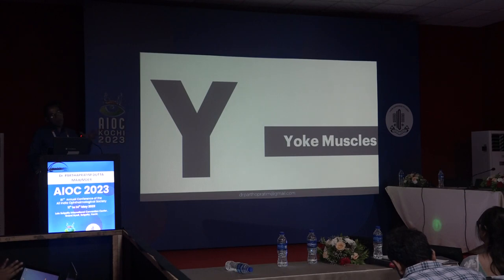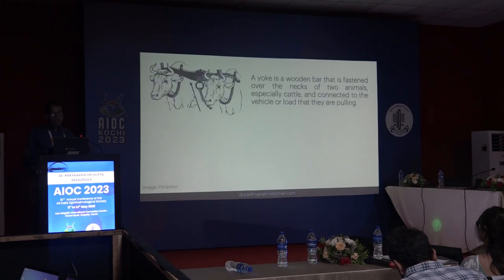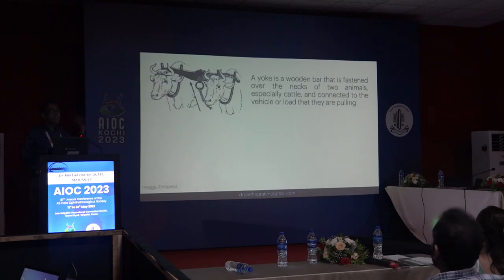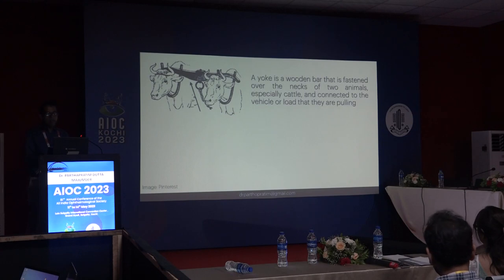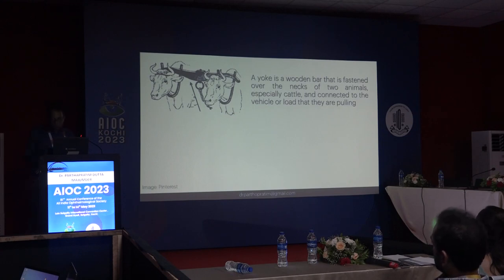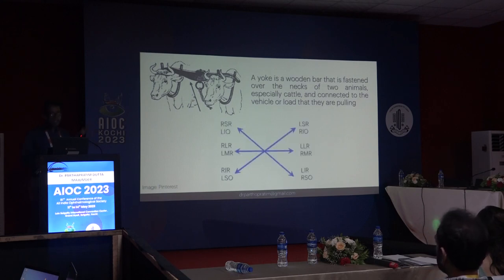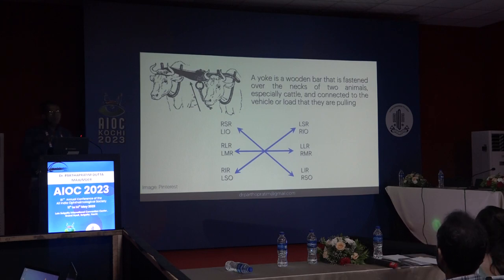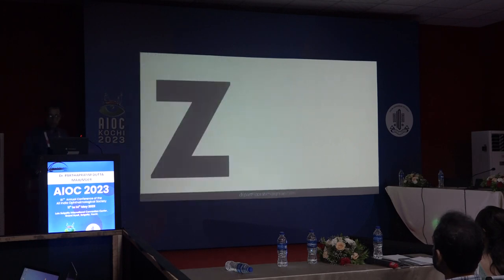Y for yoke muscles. The name comes from the yoke — the wooden bar fastened over the necks of two animals so they move together. Similarly our extraocular muscles move together in conjugate gaze. These paired sets of muscles are called yoke muscles, just as cattle move together under a yoke.